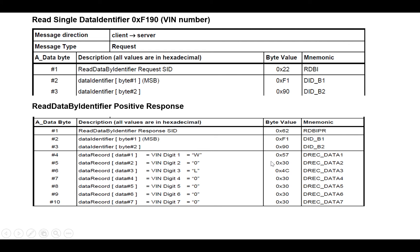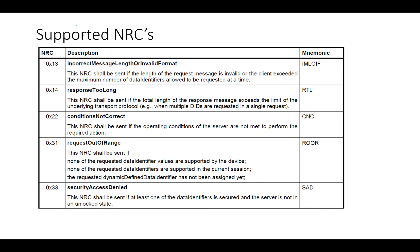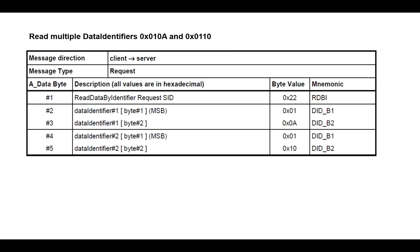If you want to read multiple data identifiers, the request format is 0x22 followed by the first DID, say 0x010A, then immediately followed by the next DID you want to read, say 0x0110. So all DID numbers are listed sequentially in the request.